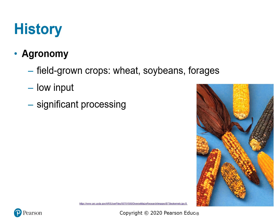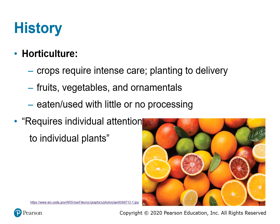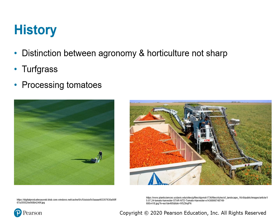Agronomy is the study of field-grown crops such as wheat, soybeans, and forages — they generally require low inputs but are subjected to significant processing. Horticulture is the study of crops requiring intensive care from planting through to the customer, including fruits, vegetables, and ornamentals, most of which are eaten or used with little or no processing. One definition of a horticultural crop is one which requires individual attention to individual plants. There are some gray areas where the two disciplines overlap, such as turf grass and processing tomatoes, which can fall into either category.